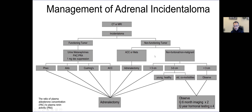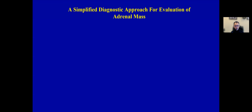If the tumor is non-functioning, which is increasingly discovered because of imaging modalities, larger tumors tend to be more malignant. There is often a size criterion: if tumors are less than 3 centimeters, they are typically observed; greater than 5 centimeters, the patient would undergo adrenalectomy. For tumors between 3 to 5 centimeters, management depends on the overall patient situation. This is a simplified approach to how patients with adrenal mass are managed.